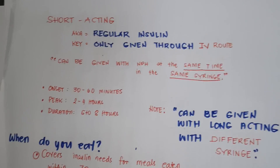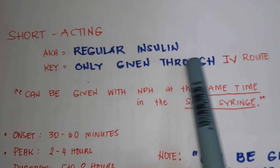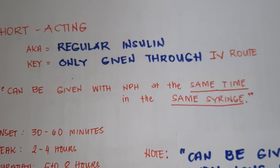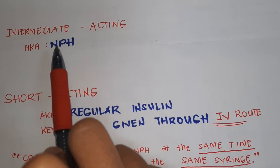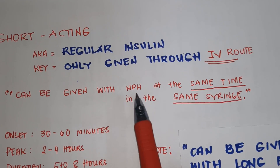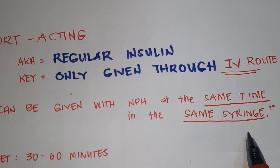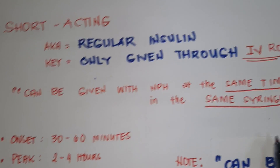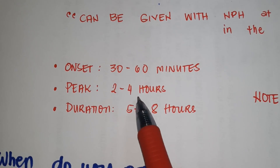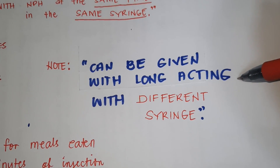Now, short acting insulins — also known as regular insulins. Always remember, these are the only type given through IV route. They can also be given with NPH (intermediate acting) at the same time in the same syringe. The onset is 30 to 60 minutes, the peak is 2 to 4 hours, and the duration is 5 to 8 hours. Note that short acting can be given with long acting, but with a different syringe.